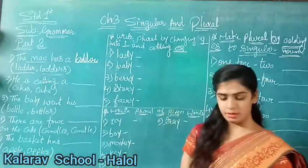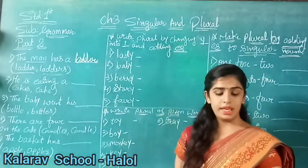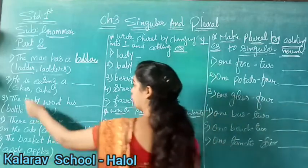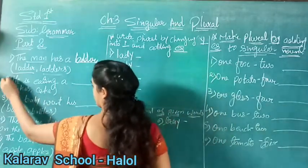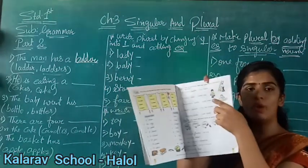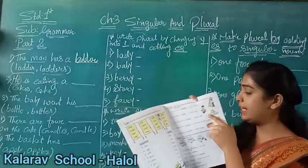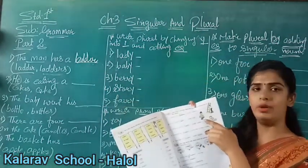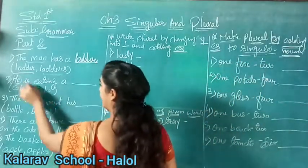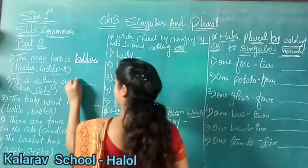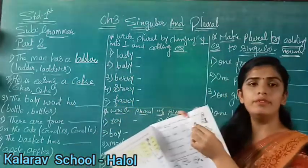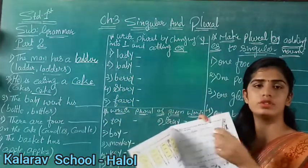Now we are moving to second number: 'He is eating blank.' The options are cakes and cake. You have two options here, and here it is singular - only one boy. See, you have a picture of a boy. How many cakes does he have? He has only one cake. So what will you write? He is eating a cake, because only one cake is there and only one boy is there - so it is singular.